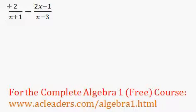All right, here we have 2 over x plus 1 minus 2x minus 1 all over x minus 3. In order to combine these fractions, we'll need a common denominator. And the least common denominator in this case will be just x plus 1 times x minus 3.